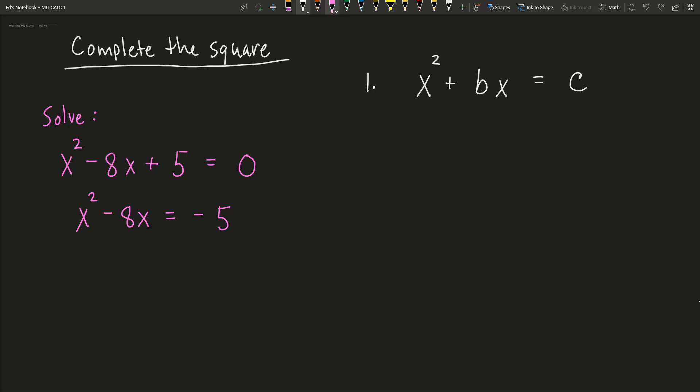Now, the second step in the complete the square process is how to get this. I need to force the left side to be a perfect square trinomial. So I need to divide b by 2, divide b by 2, then square it.